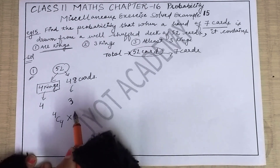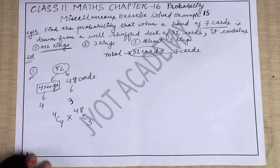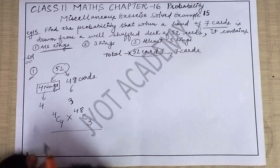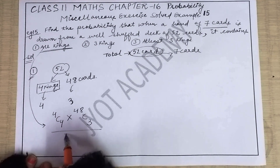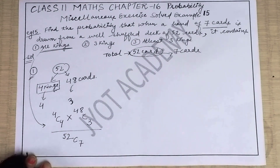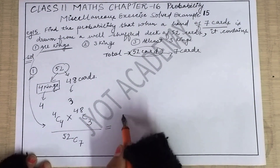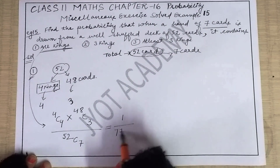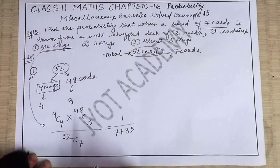The probability for the first condition is: numerator = 4C4 (all four kings selected) multiplied by 48C3 (three cards from remaining 48); denominator = 52C7 (total ways to select 7 from 52). When you solve this, you will get 1/7735. Apply the combination formula — you can also watch my videos on Chapter 7, Permutation and Combination.